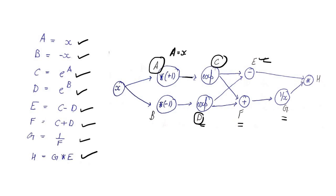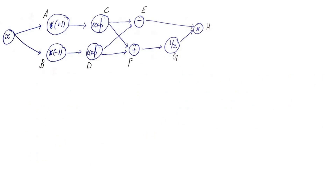We will now draw something called a dependency graph. Note that this is not a term used in literature and has nothing to do with the dependency graph in NLP — it is just a term used to make understanding simpler. We start with the last node h and draw the predecessors of each node all the way back to the origin node.